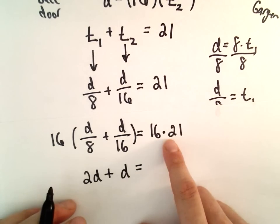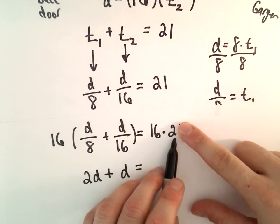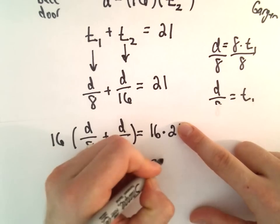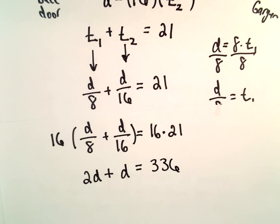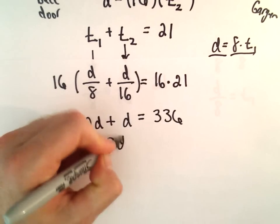Let's see, 16 times 21. 16 times 20 would be 320. If we add another 16, that looks like 336 to me. 2D plus 1D will be 3D.